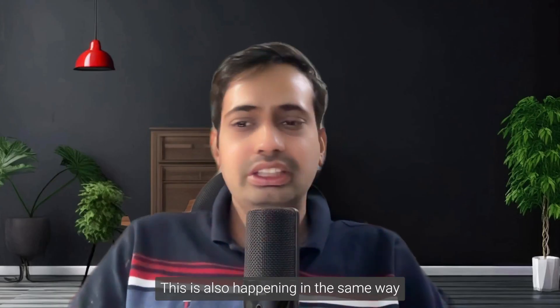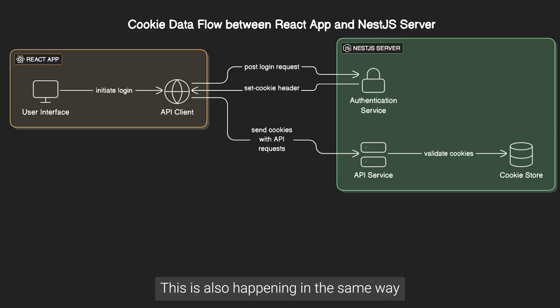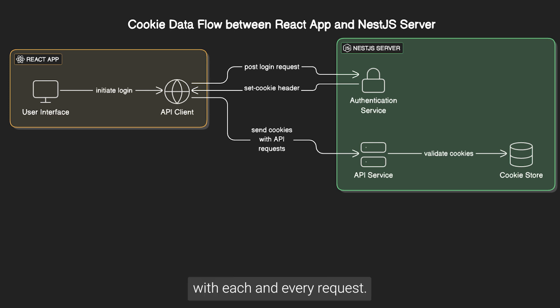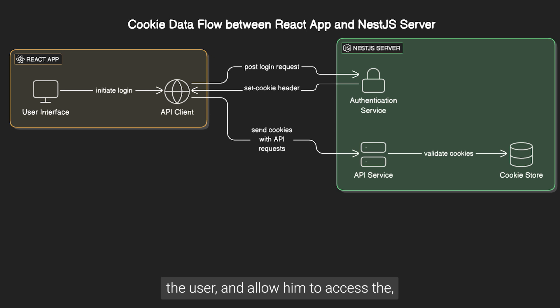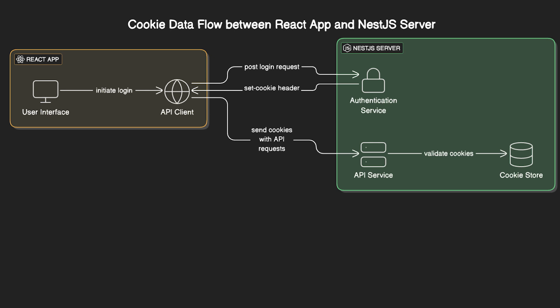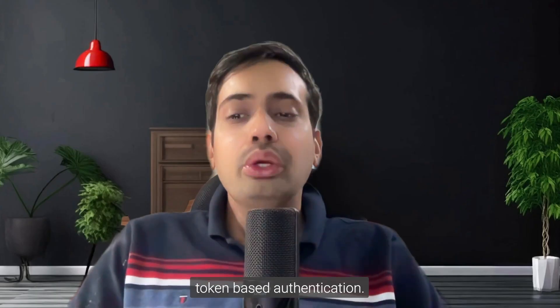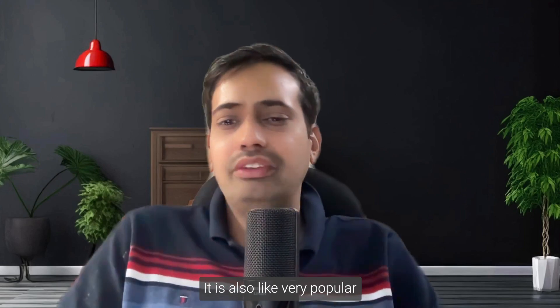Cookie-based authentication: cookies are very small pieces of data. It works similarly — the user logs in and the server sends cookies to the browser. The cookie is stored and sent back with each and every request. The browser checks the cookie, validates the user, and allows him to access his account or profile. If you clear out the cookies, or if cookies expire, you get logged out.